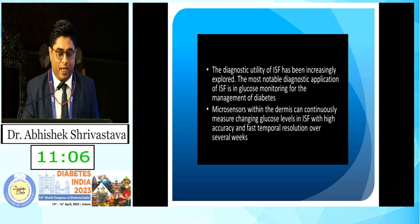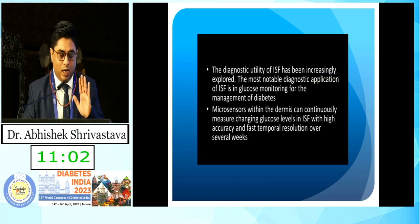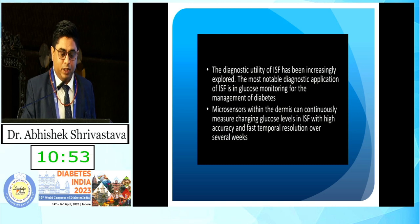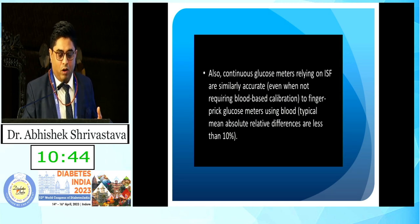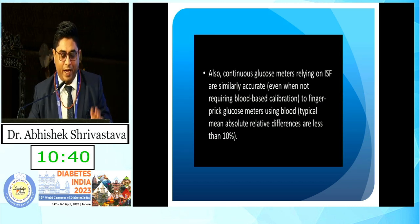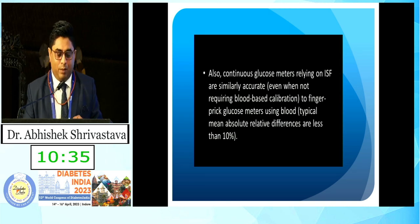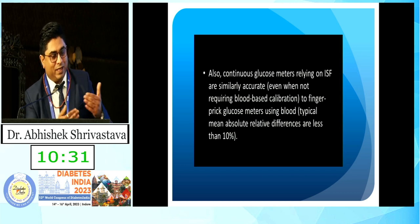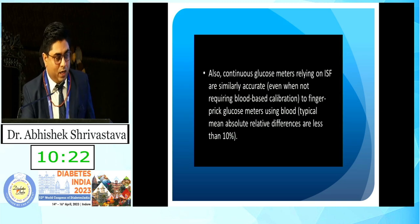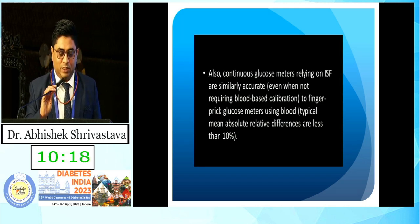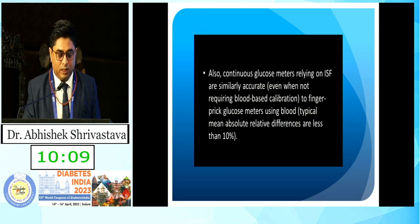The diagnostic utility of interstitial fluid has been increasingly explored in studies, and the data are more or less very much in favour of using continuous glucose monitoring and measurement of interstitial fluid glucose. Continuous glucose meters relying on interstitial fluid are similarly accurate even when not requiring blood-based calibration to finger-prick glucose. We previously thought the difference between capillary blood glucose and interstitial fluid glucose was much higher, but after research and real-world evidence, we can say that CGM does not require any calibration and can be compared with whole blood glucose.